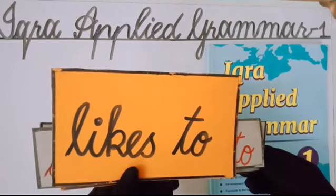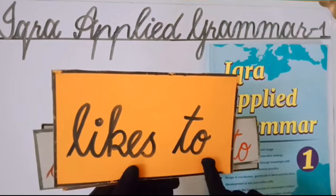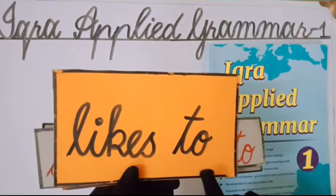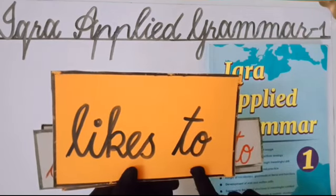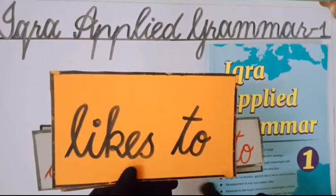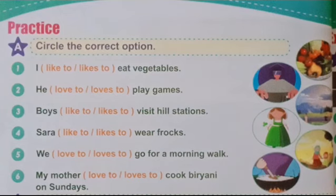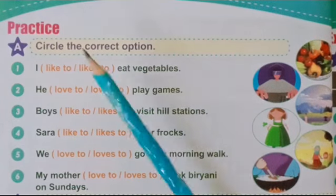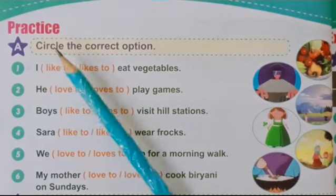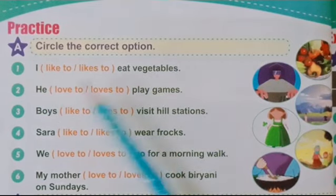For singular nouns and pronouns, we have to use the S-form — 'likes to,' 'loves to,' 'does not like to,' 'does not love to.' Keep in mind what we practiced yesterday. Let's go to the written practice. Students, Practice Exercise A — circle the correct option.